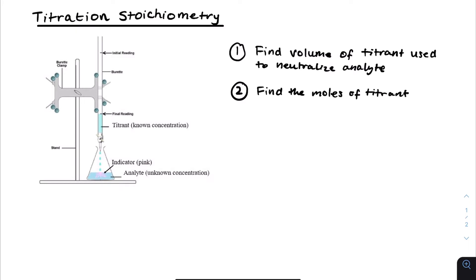The moles of the titrant can be calculated using N is equal to Cv. The titrant, we will know the concentration of, as shown in the diagram. The concentration is measured in moles per dm cubed, and the volume, which is V, is measured in dm cubed. The thing about the buret is that it measures in centimeters cubed.